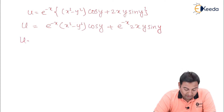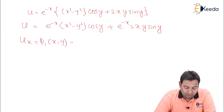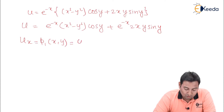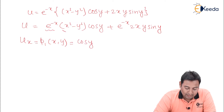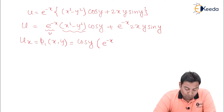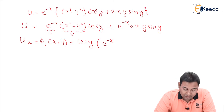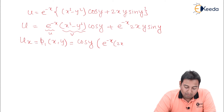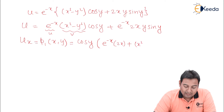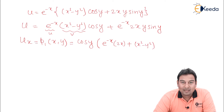We will find u_x first and name it as φ₁(x, y). Differentiating with respect to x, y is constant, so cos y is constant. Applying the product rule — u as it is, e raised to minus x as it is, times v derivative, that means the derivative of (x squared minus y squared) with respect to x, which gives 2x minus 0.